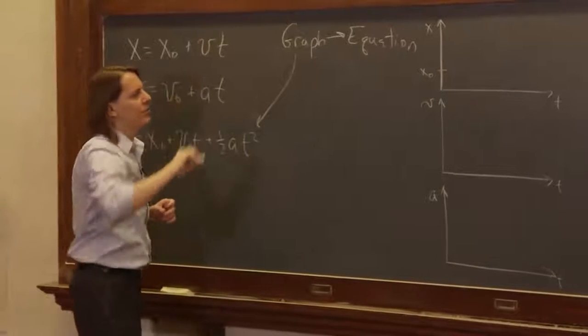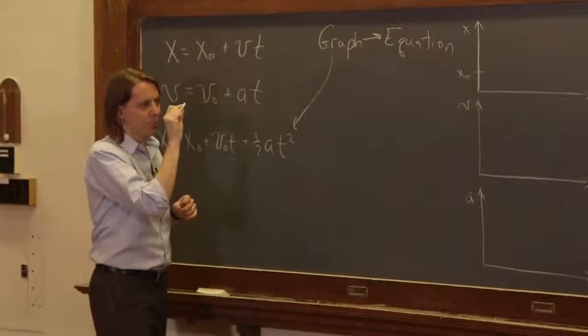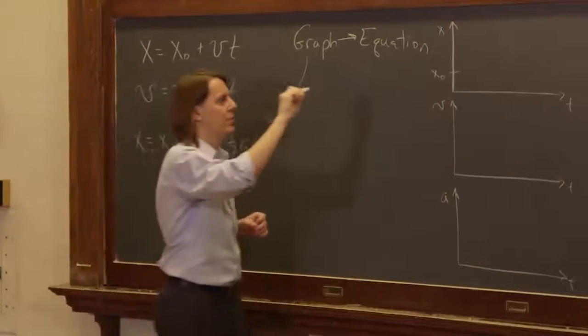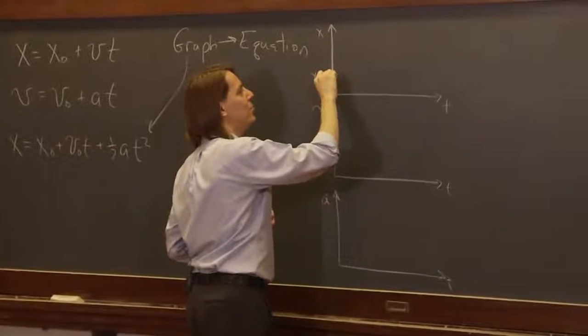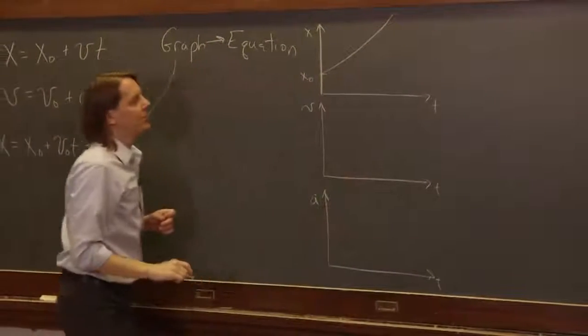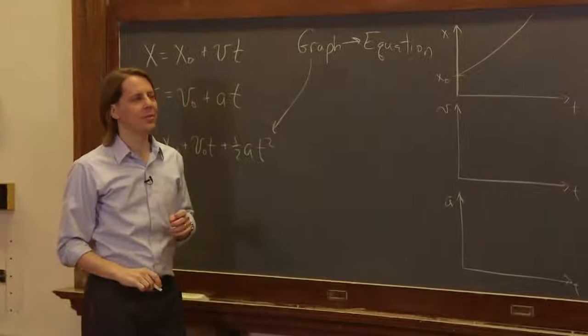And it's going to be one of those curves like I drew before, but it's not going to start with zero slope. It's actually going to start with some finite slope because it started at some finite velocity. It's going to go off like that somehow.